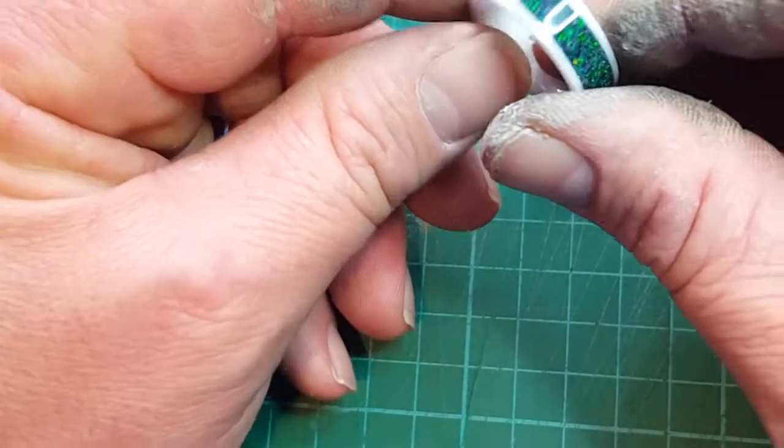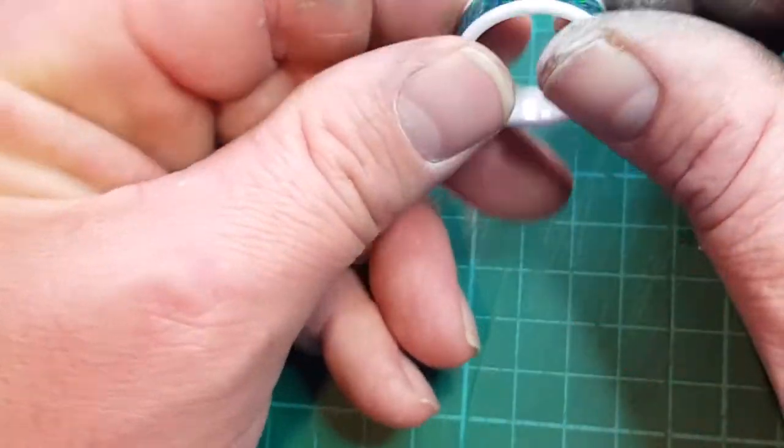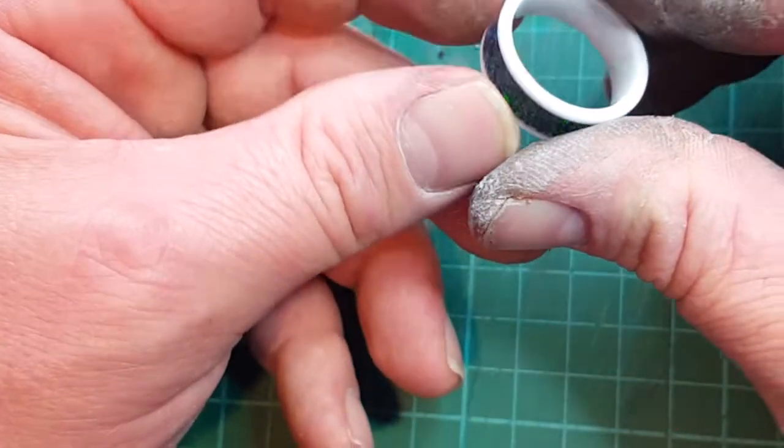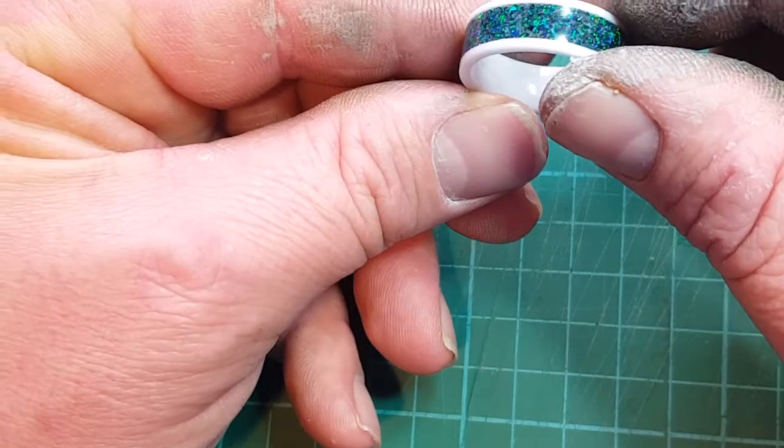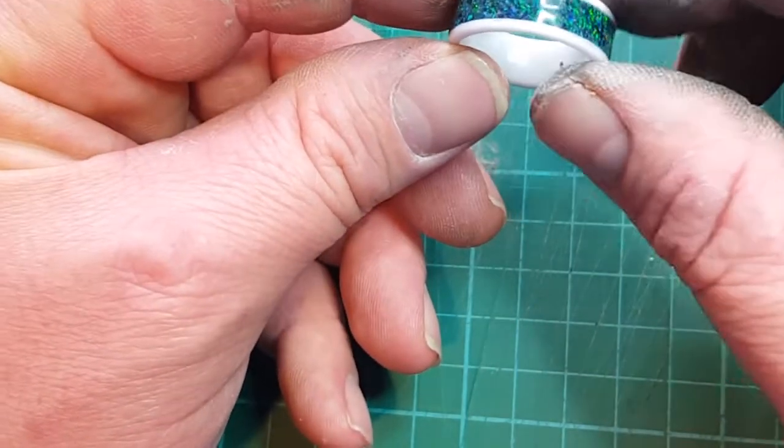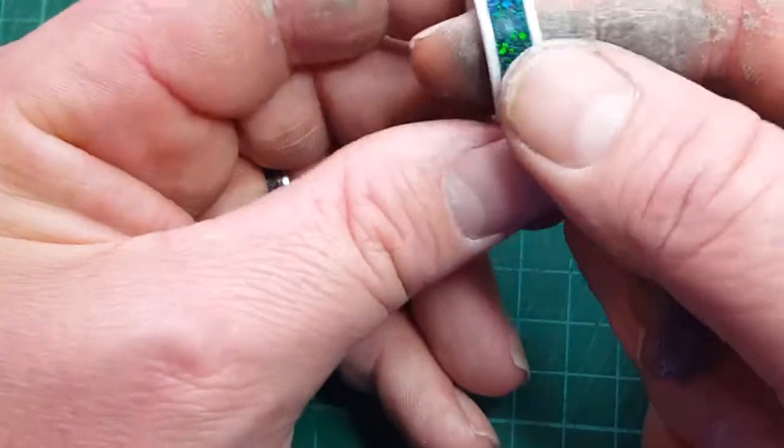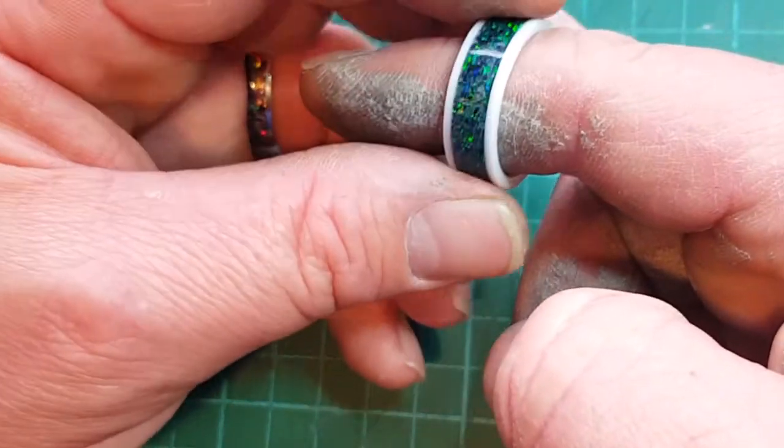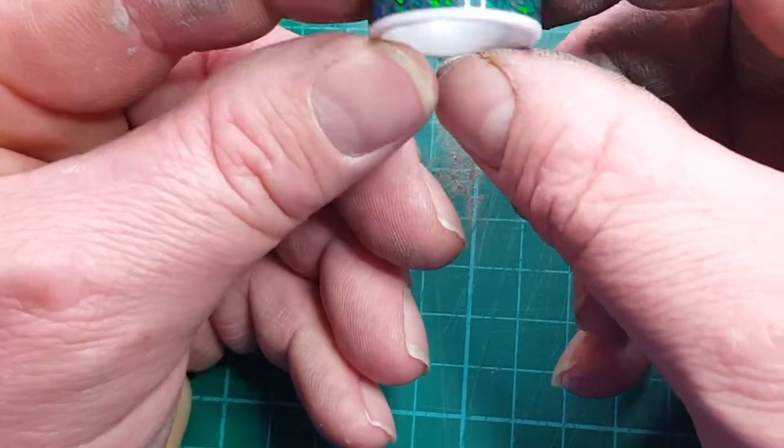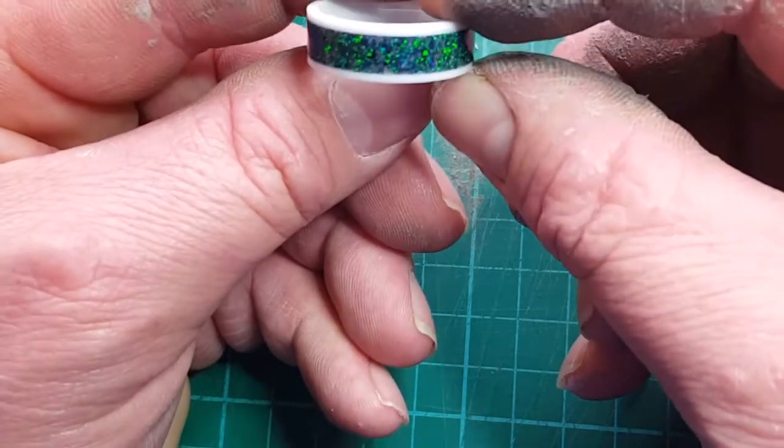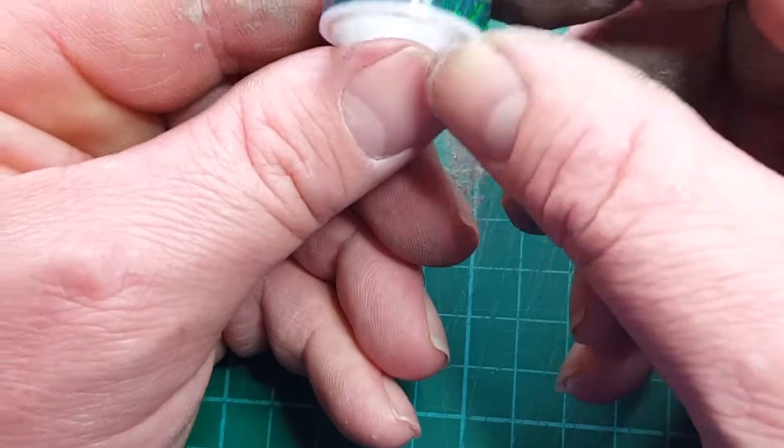We're back. We've polished it up and this is a white ceramic ring with a sea green opal inlay. This is pretty stunning if I do say so myself. I don't know if these pictures are coming across, but this is a stunning ring. It's a stunning opal.